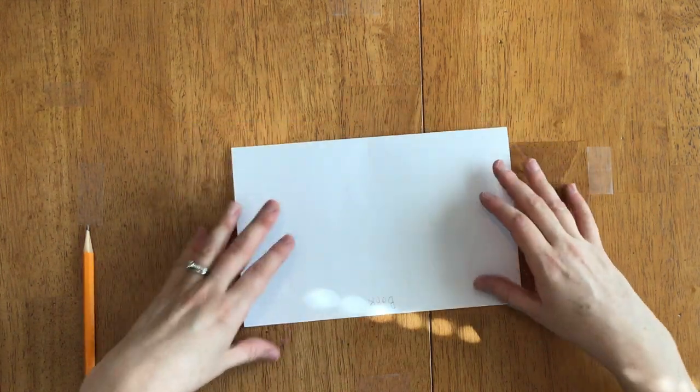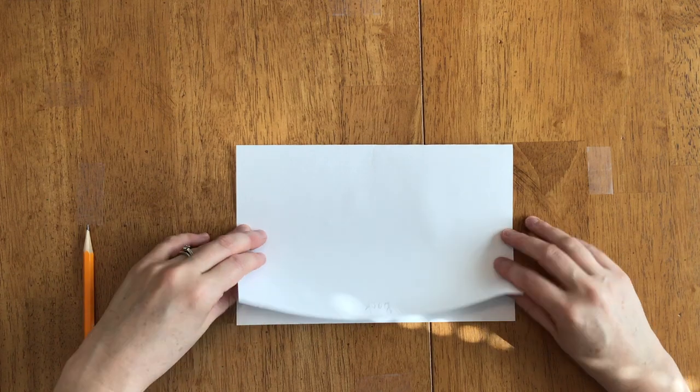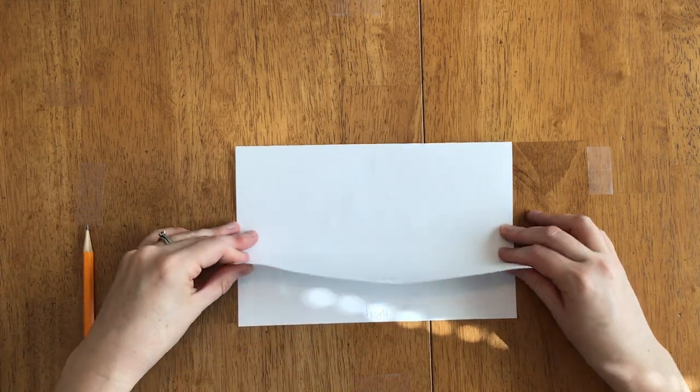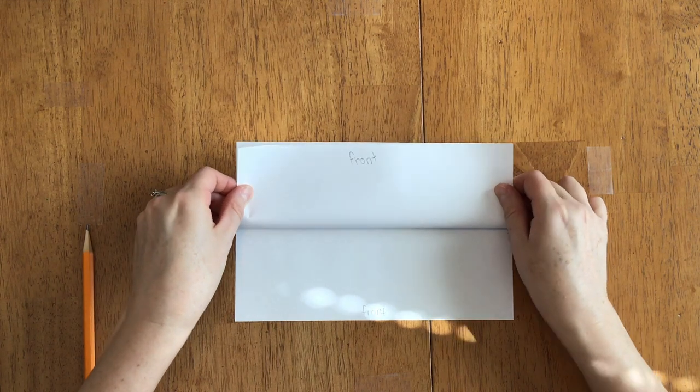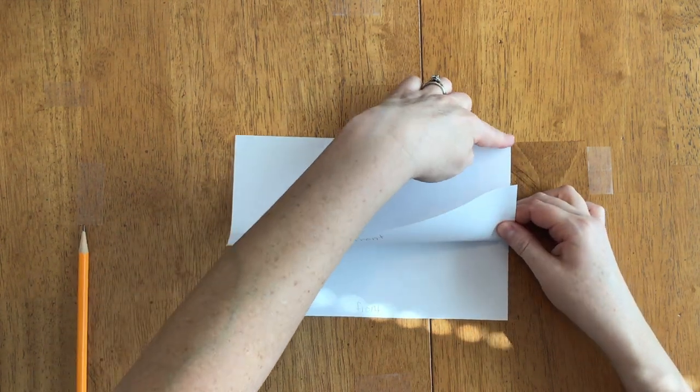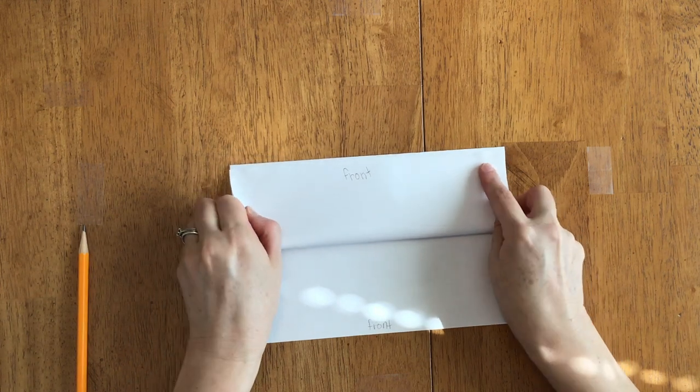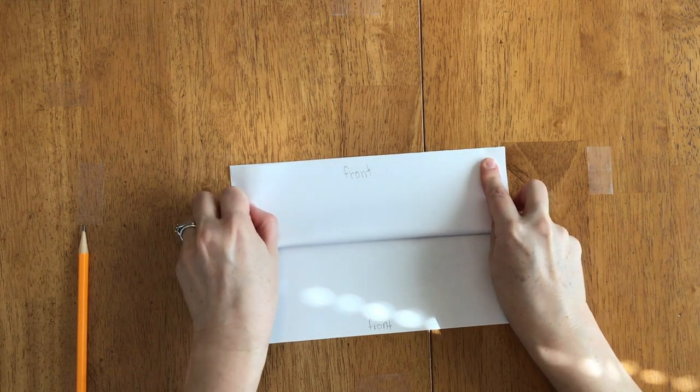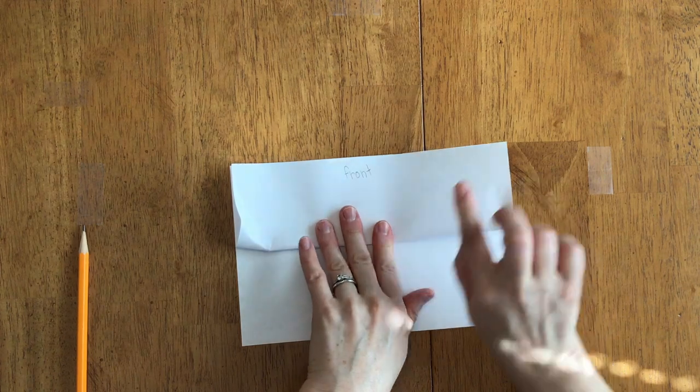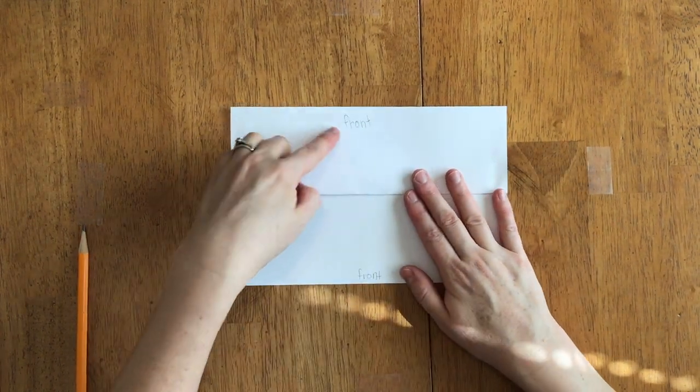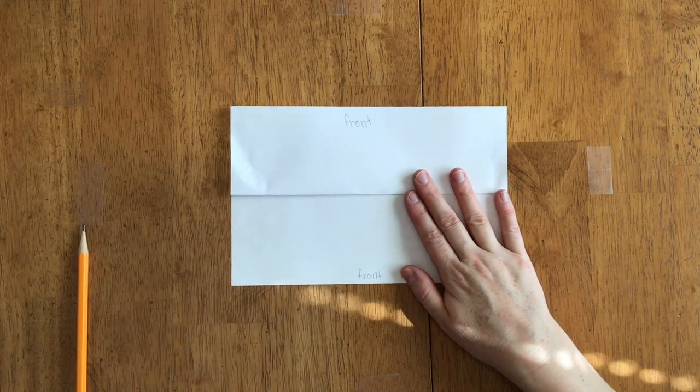Now I am going to take my flap right here that says back upside down and I'm gonna fold this up. So I want this corner to match here and this corner to match there. So I'm gonna line those corners up just like that. Press down in the center, zip up, zip down. So now your paper should say front and front.